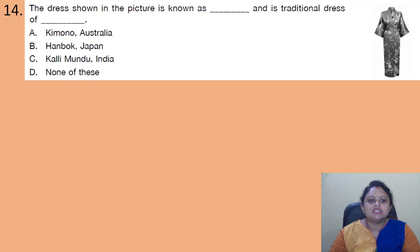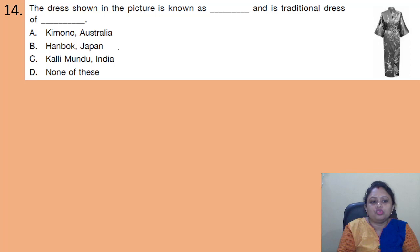The dress shown in the picture is a traditional dress. Options are: A - Kimono, Australia; B - Hanbok, Japan; C - Kalimundo, India; D - none of these. The correct answer is option D — none of these.